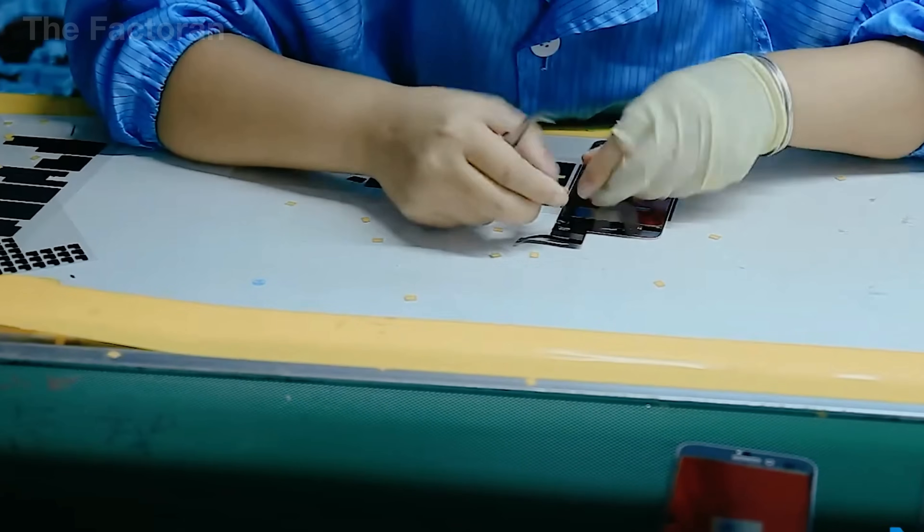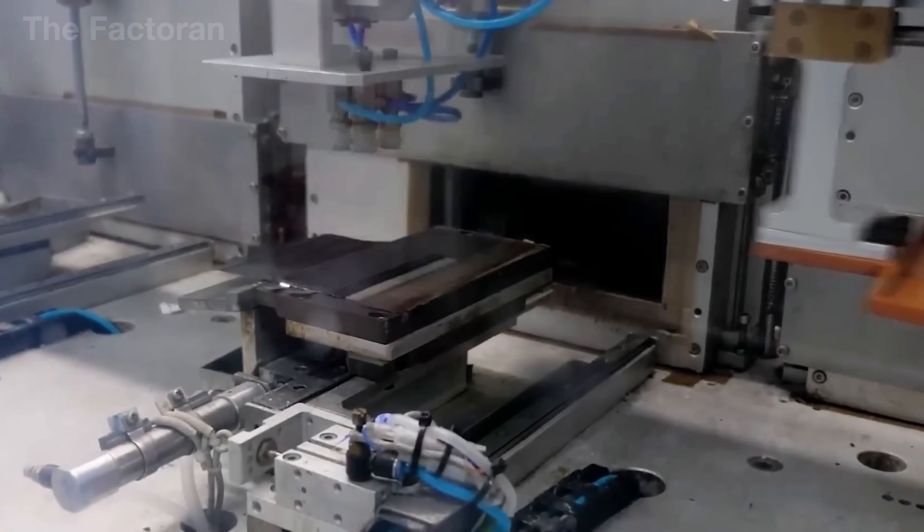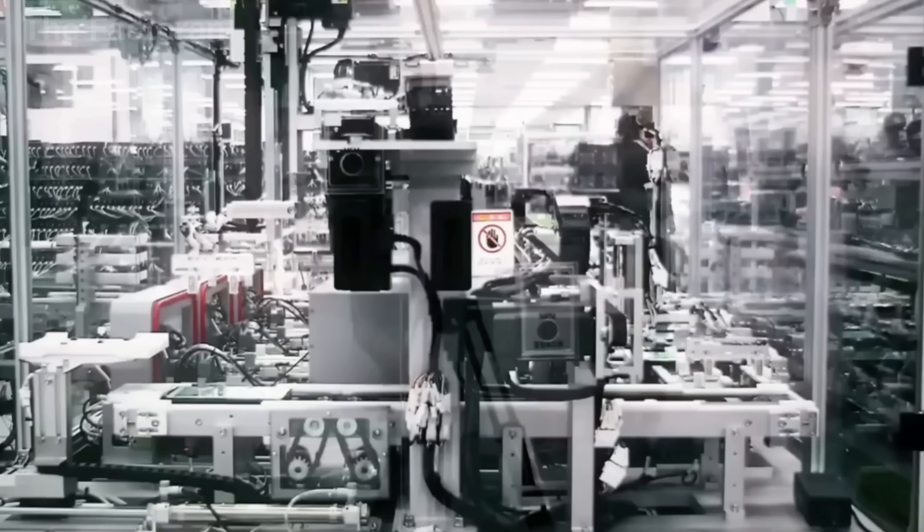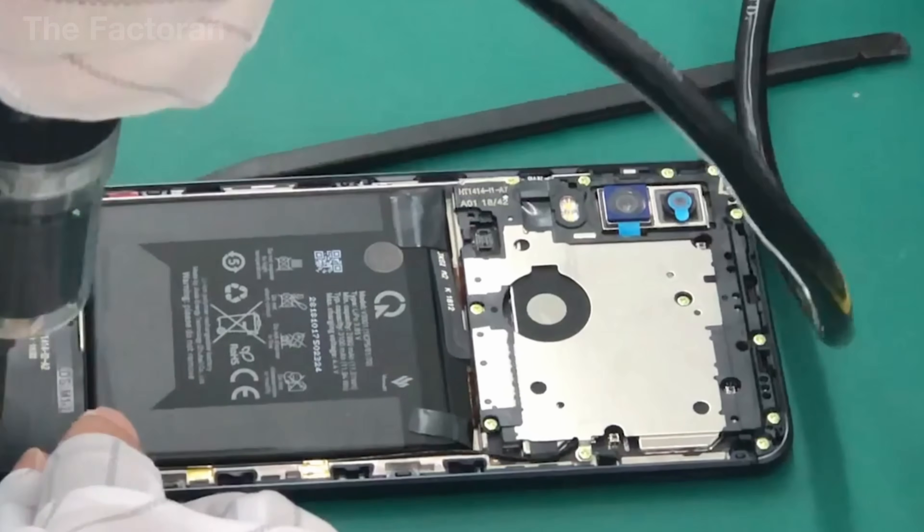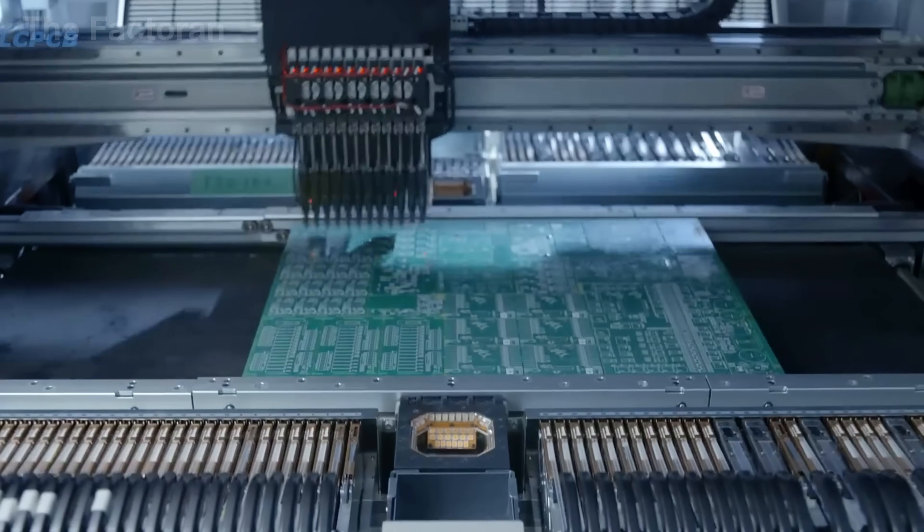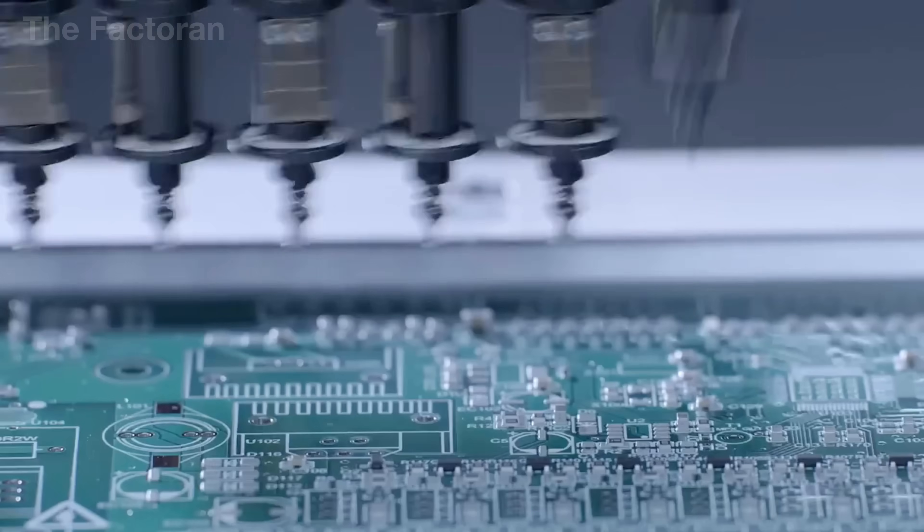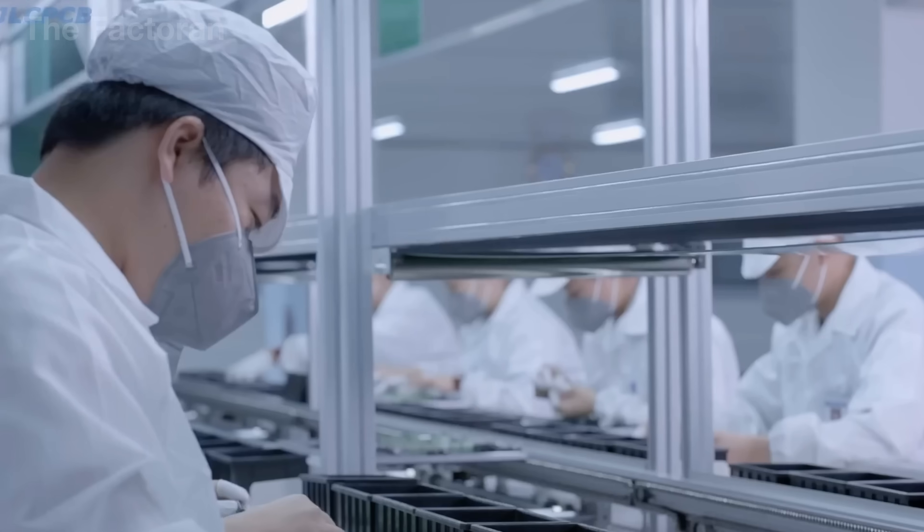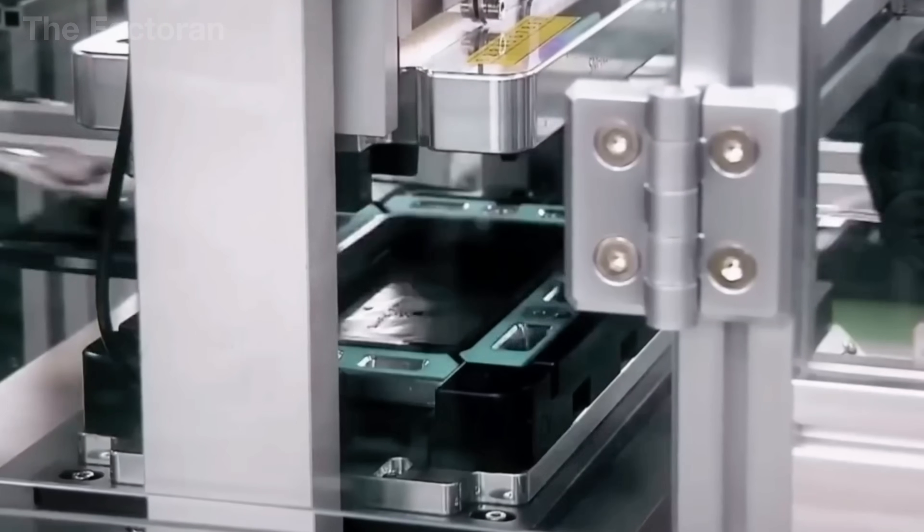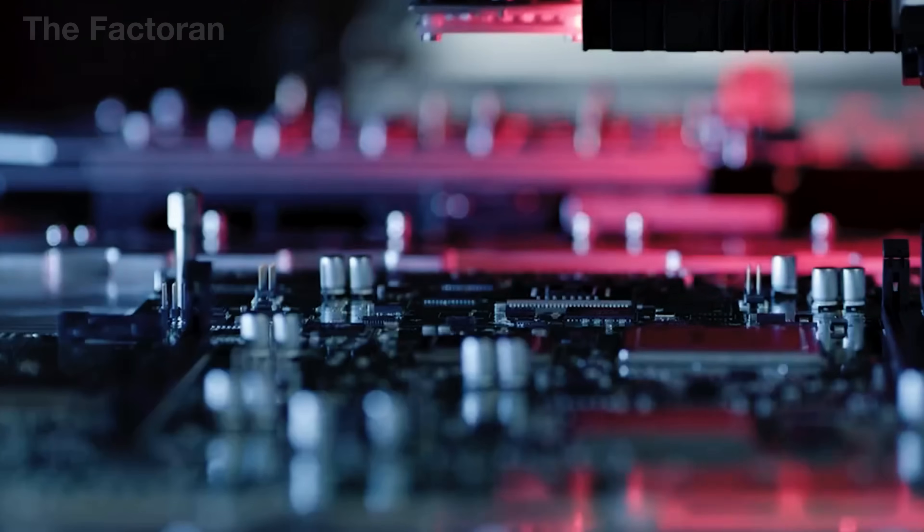Once all components have been fully prepared, the assembly line enters its most critical phase, a stage in which even the slightest error can lead to severe consequences, ranging from a faulty screen, short circuits, to the risk of battery failure or explosion. At this point, absolute precision becomes a matter of survival. The process begins with the placement of the main circuit board, which houses the CPU and memory into the device chassis with micron-level accuracy. The circuit board must be perfectly secured to ensure seamless connections with other components without any deviation.